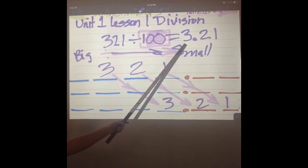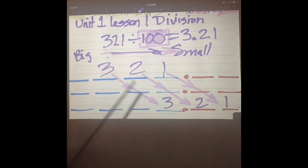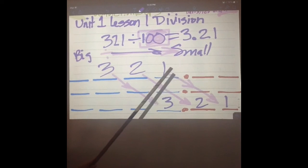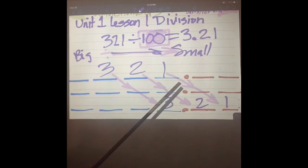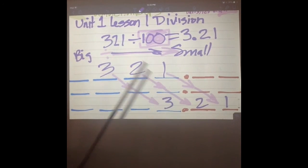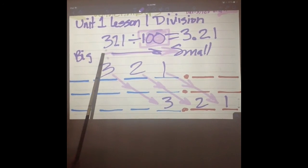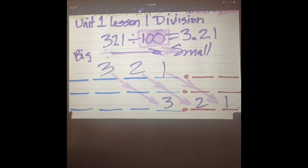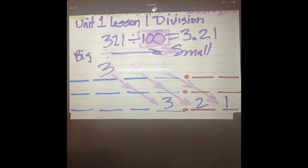If we turn this into money, it would be three dollars and twenty-one cents. And last time we had 32.1, so it still went from big to small, didn't it? Does everybody see that? Yes. Any questions? No.